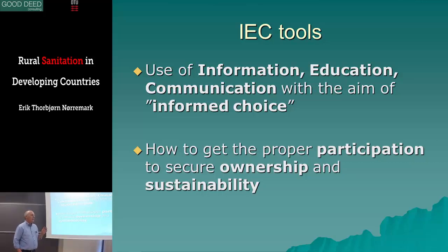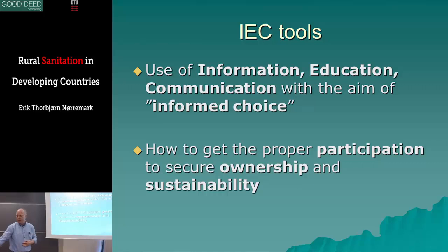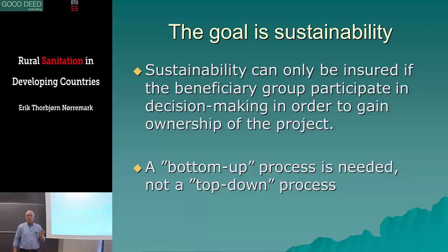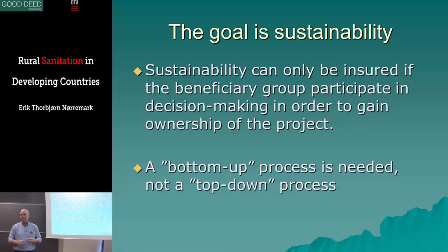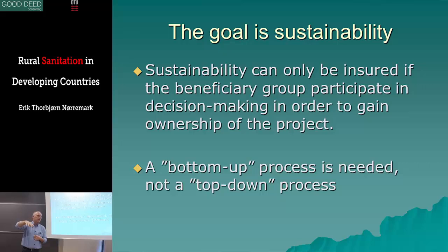The tools are made for getting proper participation of the target group to secure ownership and sustainability. You can only secure sustainability if you make the beneficiary group or target group participate in the decision-making, so they feel it is their project and their decisions. You can call it a bottom-up process, compared to imposing solutions that you have decided are good for them.